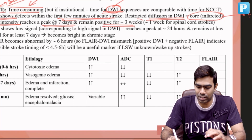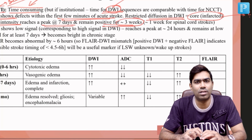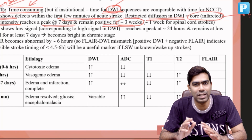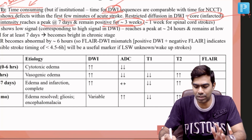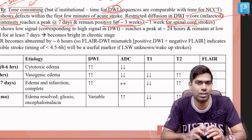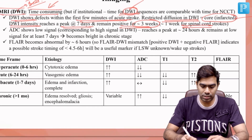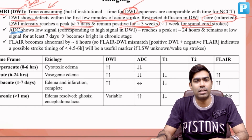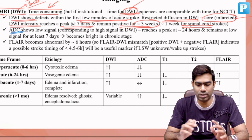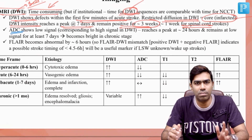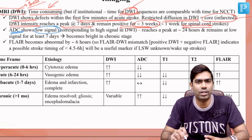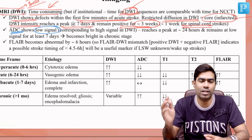In cortical strokes, the DWI abnormality persists for approximately 3 weeks. For spinal cord strokes, the abnormality is estimated to persist for only 1 week. Apparent diffusion coefficient — ADC — can be called the brother of DWI, as it also picks up areas of restricted diffusion, but shows low signal instead of high signal.